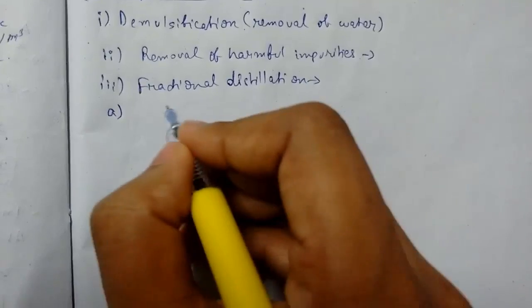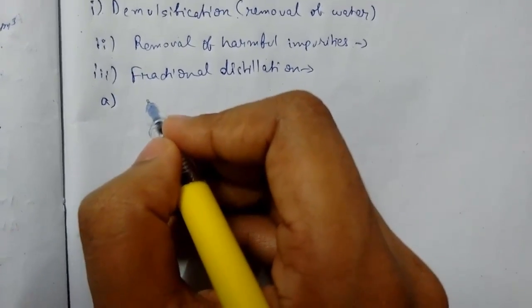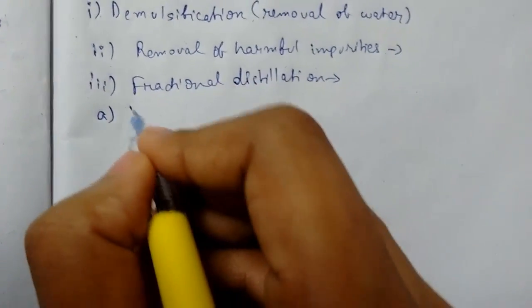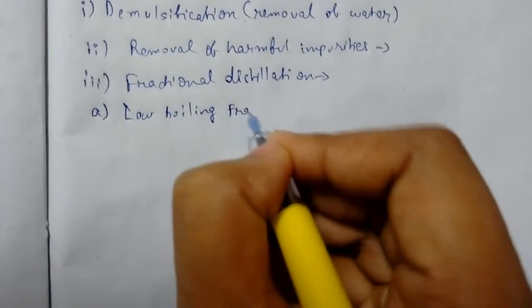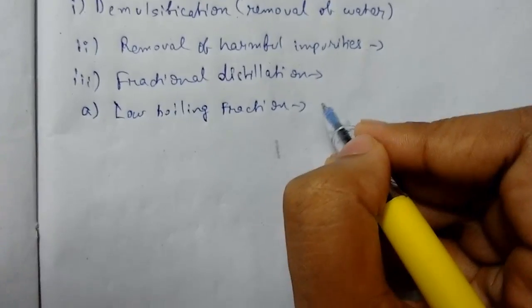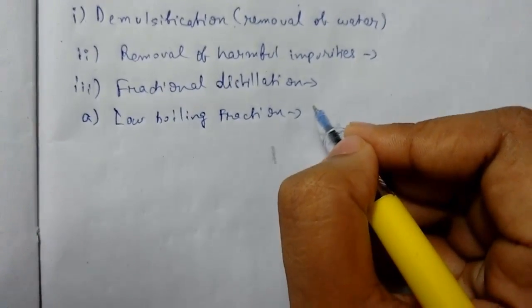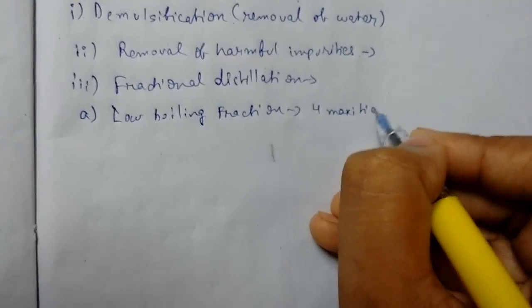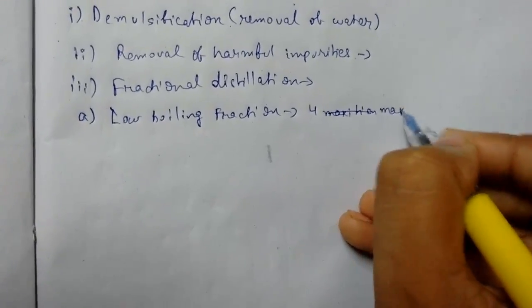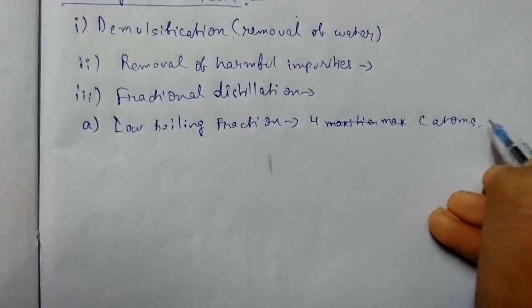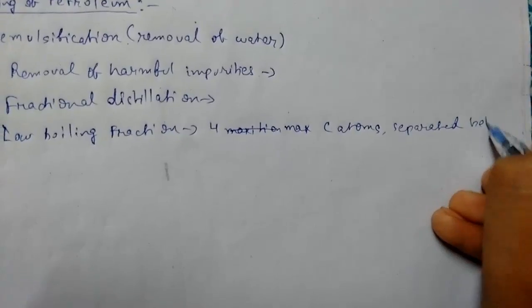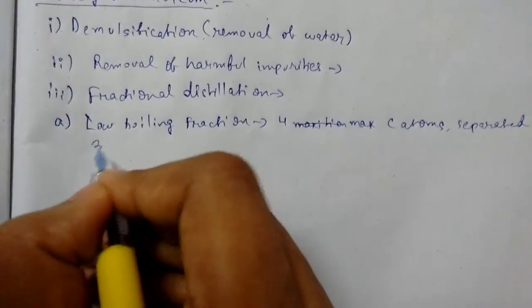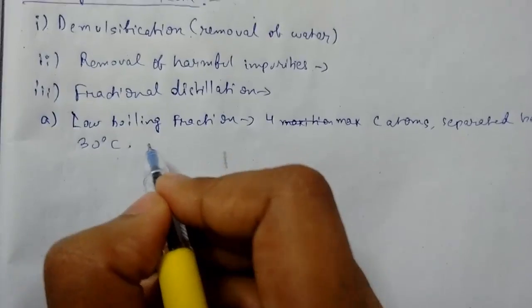After fractional distillation, we get many products in the fractionating column. The first is the low boiling fraction, which comprises a maximum of four carbon atoms and is separated below 30 degrees Celsius. It is known as LPG — liquefied petroleum gas.